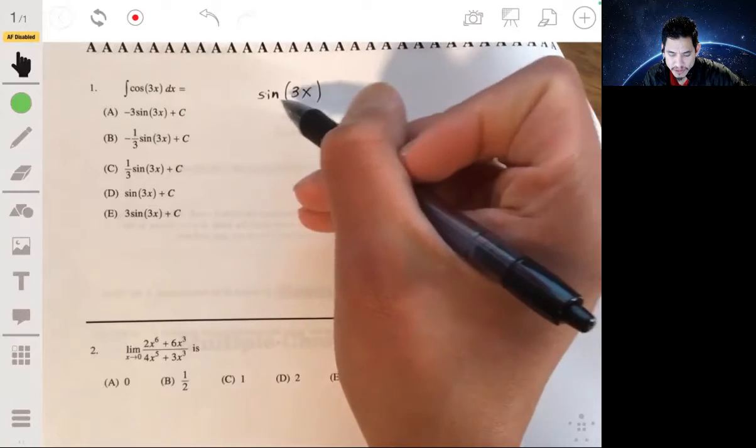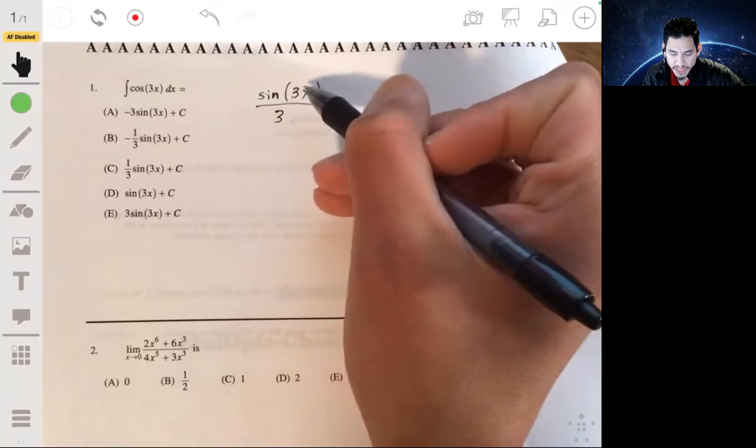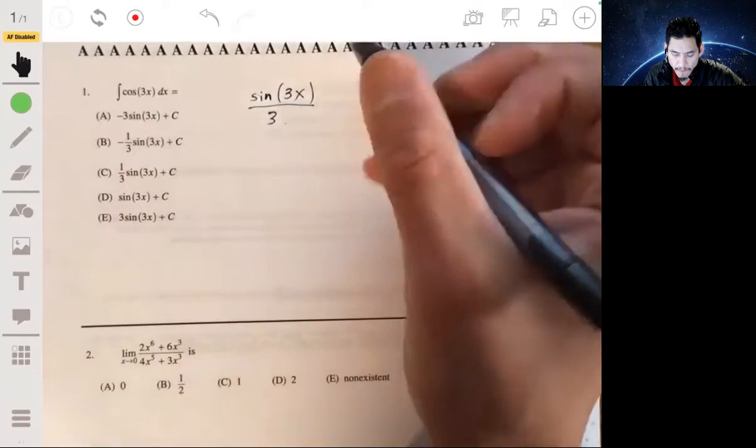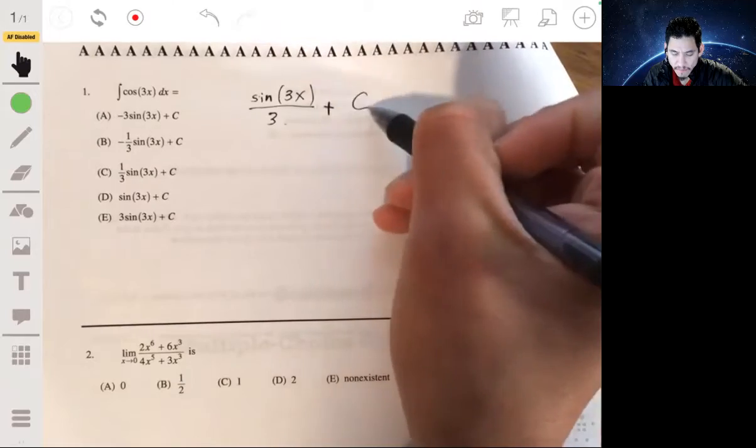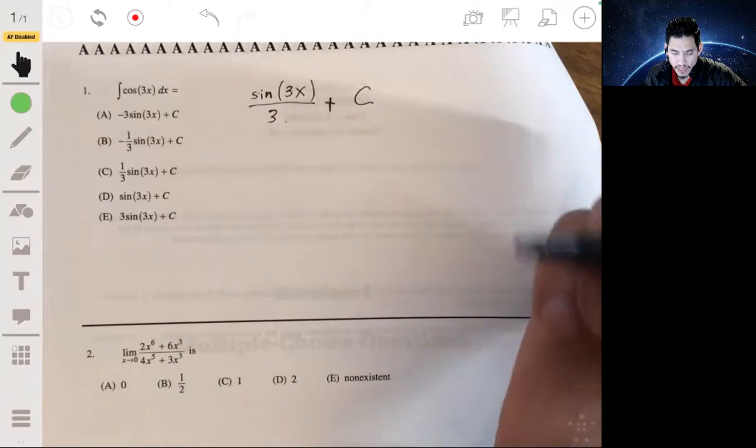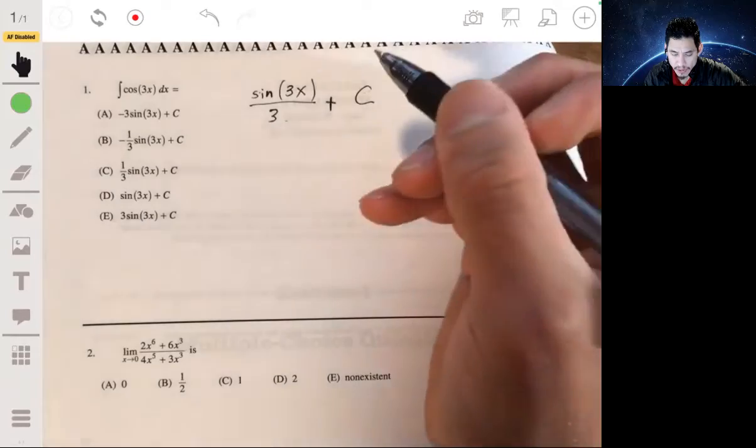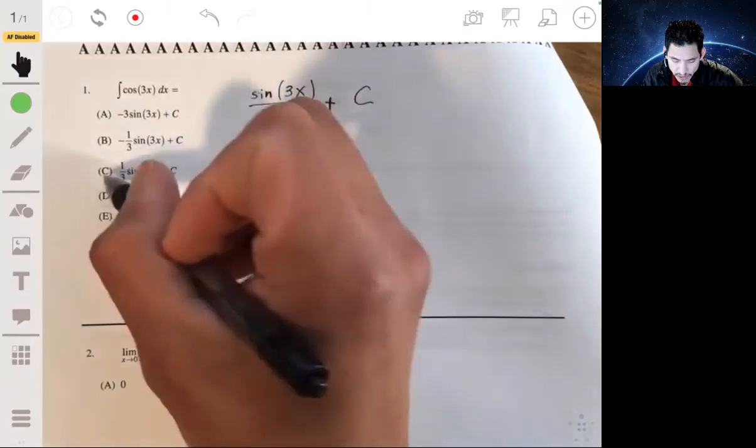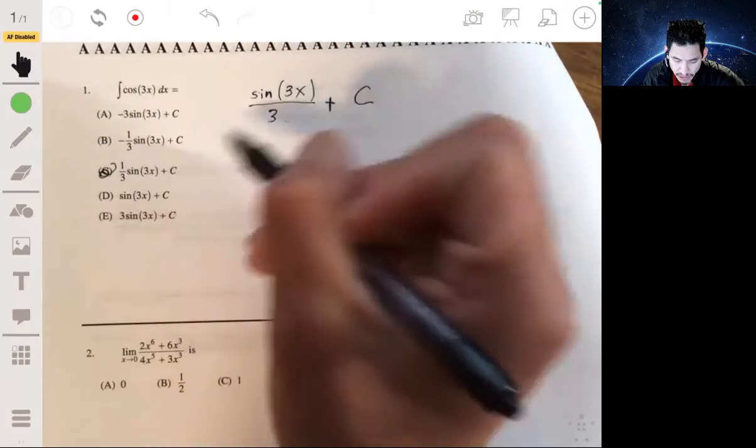And let's make sure to divide this by 3, because if we took the derivative of the sine of 3x, we would have to multiply by 3, and those 3s will cancel. Let's not forget our constant. Our answer would be c, one-third the sine of 3x plus c.